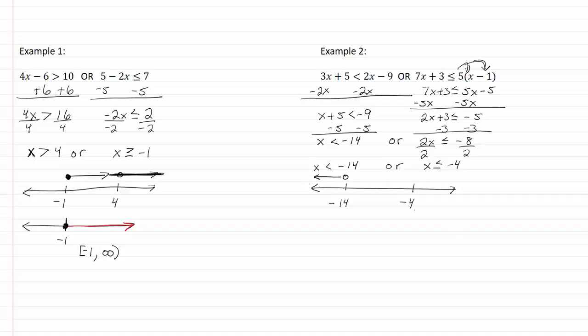Negative fourteen is going to have an open dot and it says that x is less than negative fourteen. So we're going to negative infinity and at negative four we're going to have a closed dot and it's also going to be less than negative four. So it's going to negative infinity also.